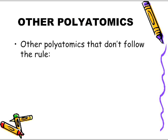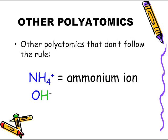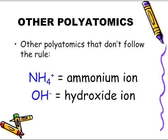Some other polyatomics that don't follow the Nick the Camel rule that you must memorize: NH4 positive one is the ammonium ion — we're going to treat that as a metal. And OH negative is the hydroxide ion. Those are the only two that don't really follow the Nick the Camel rule.